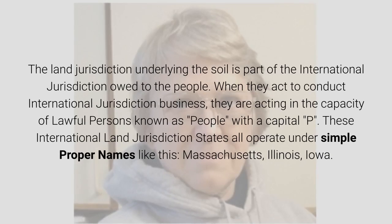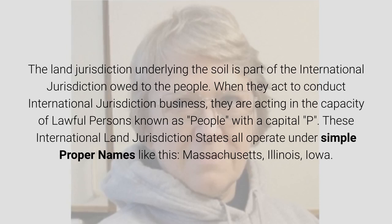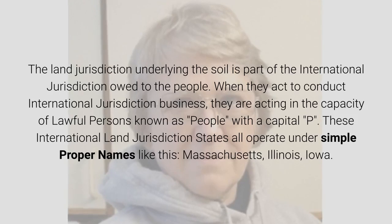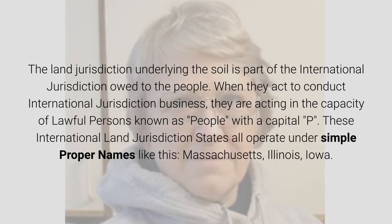All living people are unincorporated and sovereign by nature. The people come together to decide local issues related to their soil jurisdiction within the borders of their Republican state, the main republic. The land jurisdiction underlying the soil is part of the international jurisdiction owed to the people. When they act to conduct international jurisdiction business, they are acting in the capacity of lawful persons known as PEOPLE. These international land jurisdiction states all operate under simple proper names like Massachusetts, Illinois, Iowa.